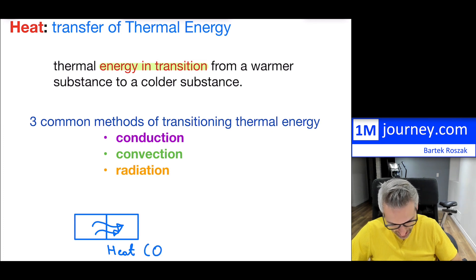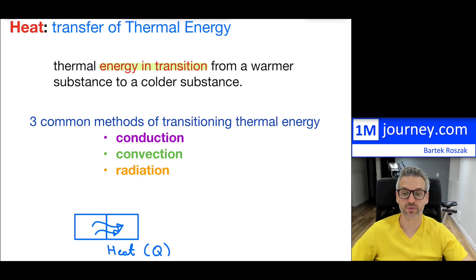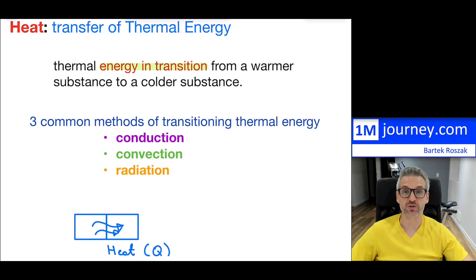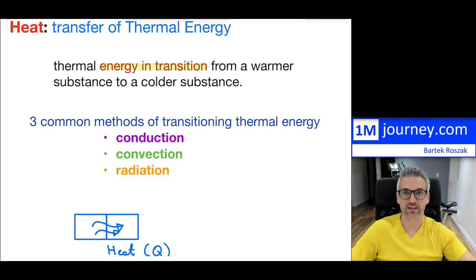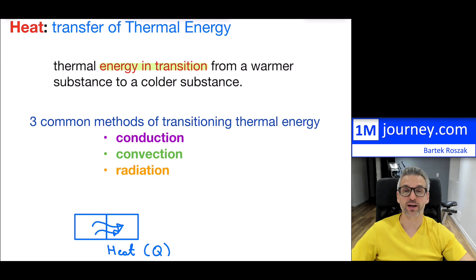In physics, heat is very often designated with a capital Q. It's very similar to mechanical energy, where you can transfer energy from one form to another — for example, from kinetic to potential — by doing work. That work was energy in transition. Similarly, when talking about thermal energy, that energy in transition is referred to as heat. Technically, thermal energy is the energy stored, and heat is actually the energy transitioning to either another form or into another substance.